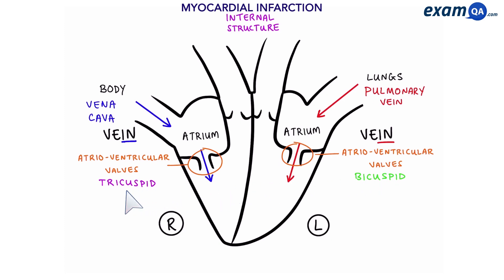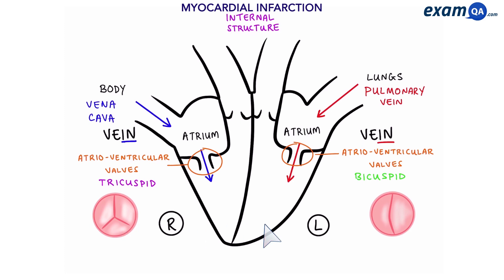They are called that because of the number of cusps they have. A bicuspid has two valves — bi as in two — and a tricuspid has three small valves, tri as in three.